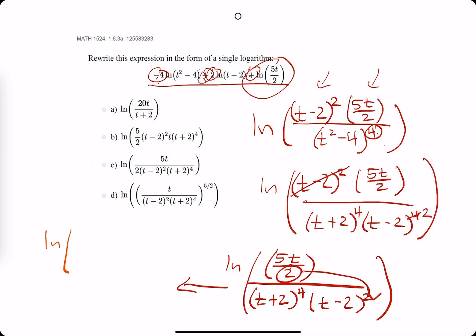ln of 5t, bring this 2 to the bottom out front, times t plus 2 to the 4th times t minus 2 squared, all closed. Let's see what we have. Any of them with 5t on top, it's looking like option C. Option C is correct for this problem.